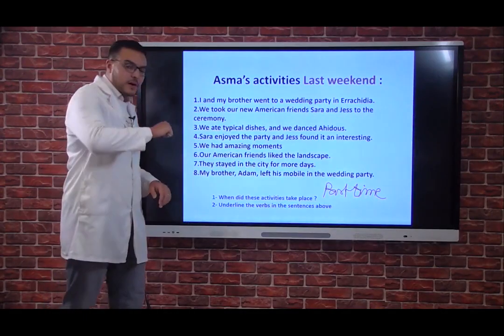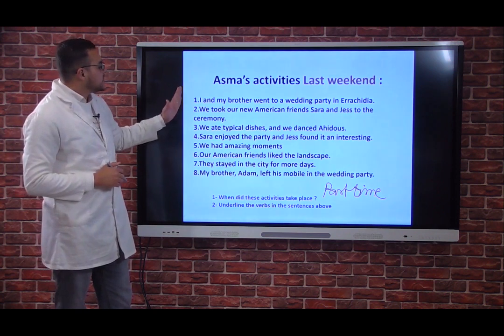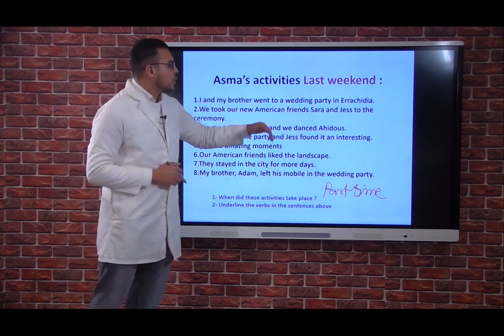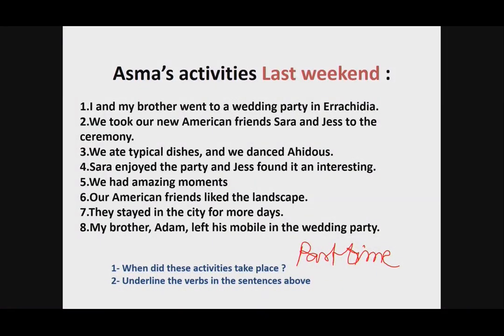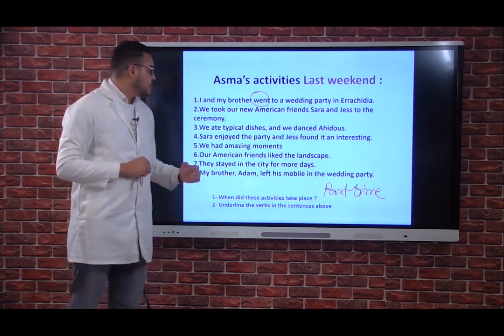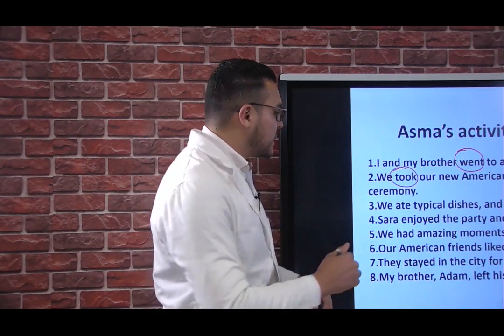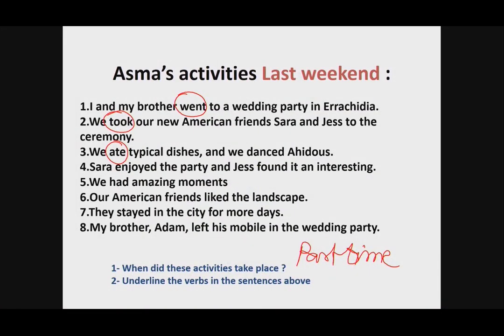Number two: we need to underline or circle the verbs in the sentences above. Starting with the first one — she said: I and my brother went to a wedding party in Rashidia. So what is the verb? The verb is 'to go' in the simple past, and we say 'went.' Number two: we took our new American friends Sarah and Jess to the ceremony. The verb is 'to take,' which takes the form 'took' in the simple past. Number three: we ate typical dishes — the verb is 'ate,' which is 'to eat' in the simple past.